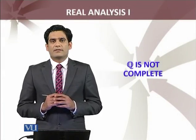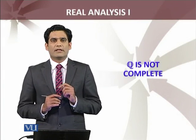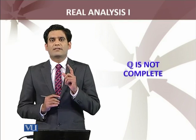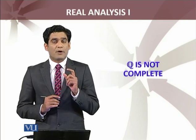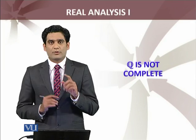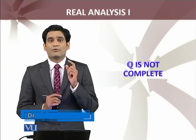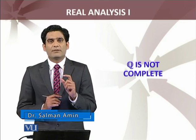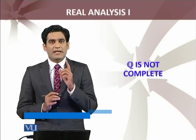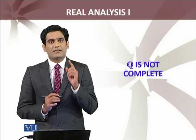We are going to discuss that the set of rational numbers is not complete. Remember the definition of a complete set: a set is said to be complete if every non-empty subset of that set which is bounded above has its supremum in the set. We have defined the set of real numbers as a complete set — any subset of the set of real numbers, if non-empty and bounded above, its supremum will be from the set of real numbers itself.